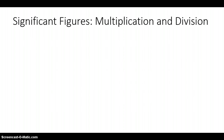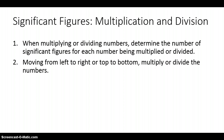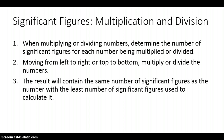That's for addition and subtraction. There are different rules for multiplication and division. First, when multiplying and dividing numbers, you want to determine the total number of significant figures for each number — unlike addition and subtraction where you only look after the decimal point, here you look at the total number of significant figures within the number. Second, multiply or divide moving left to right. Third, the results will contain the same number of significant figures as the number with the least number of significant figures used to calculate it.